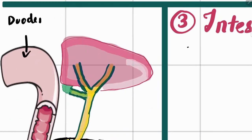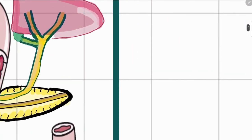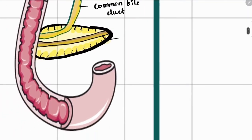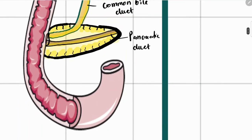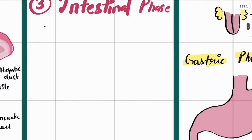In the duodenum, several accessory organs drain their secretions into it. Bile is secreted and stored in the gallbladder, then released through the common bile duct into the duodenum via the duodenal papilla. The pancreatic duct also secretes pancreatic juice into the duodenum.